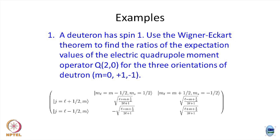The CG coefficient is not really applicable here directly because this one was a linear combination: one was L equal to 1 and the other one was L equal to half. So let us not use this, but the question is what will this be using the Wigner-Eckart theorem.